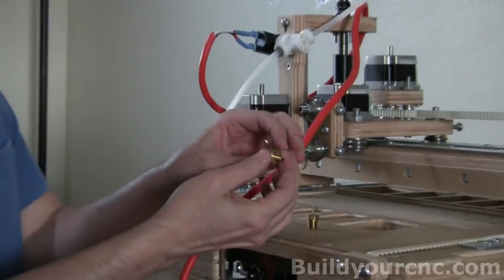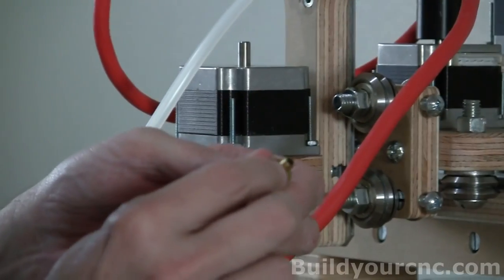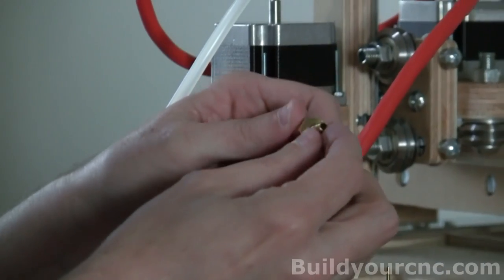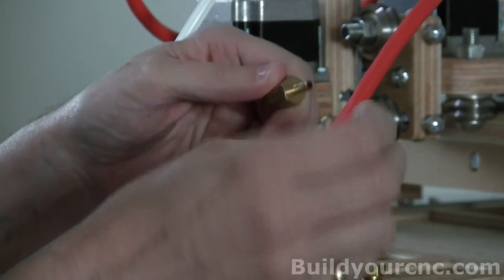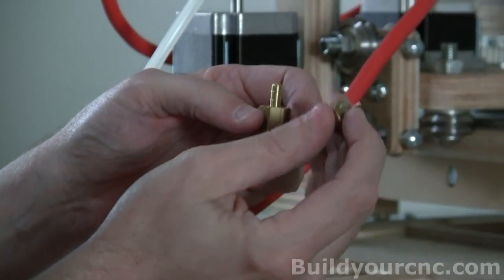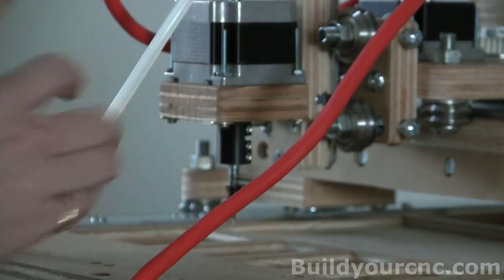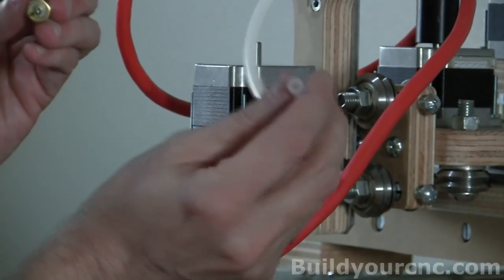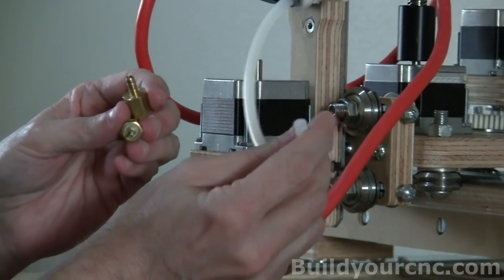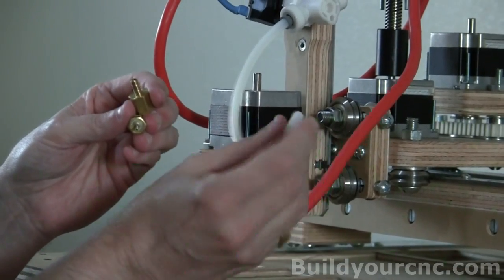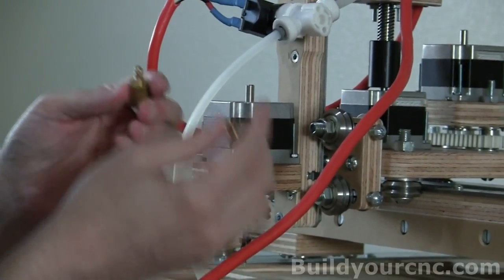You'll also need a fitting like this. It has a 1/8 inch size tube fitting, and you'll need a 1/16 inch tube fitting. The 1/8 is the inside diameter of this particular tube. This is considered a 1/4 inch tube with an inside diameter of 1/8, and we're going to be using 1/16.